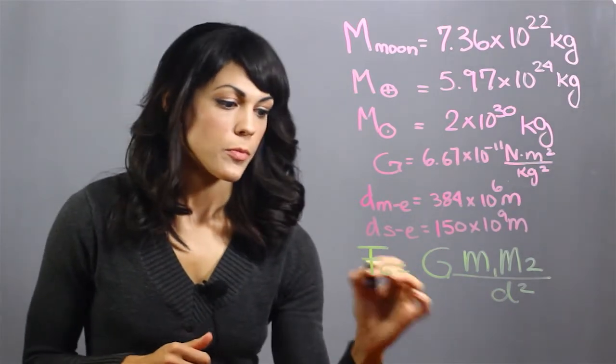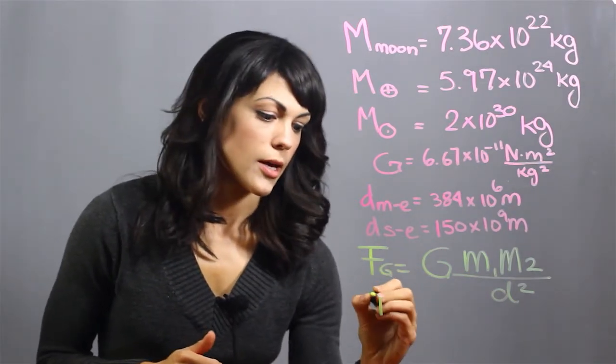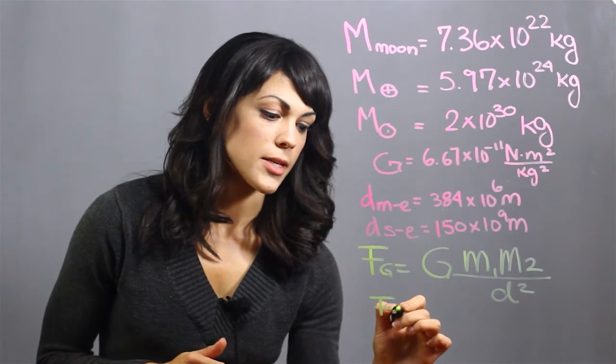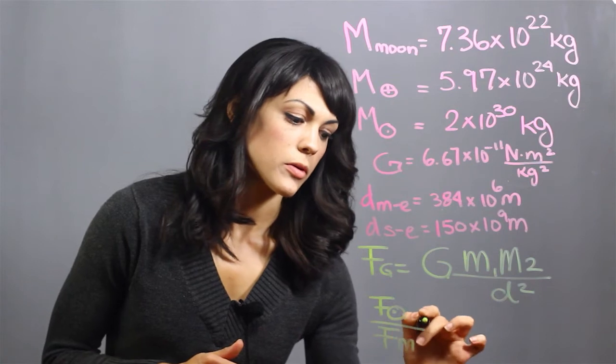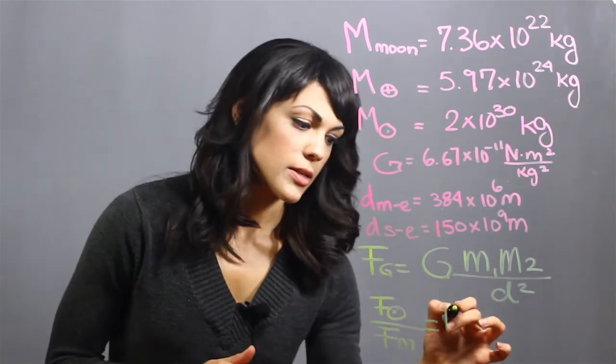Now, if you plug this all into your calculator, you should find out that the gravitational force of the sun compared to the gravitational force of the moon on earth is 177.